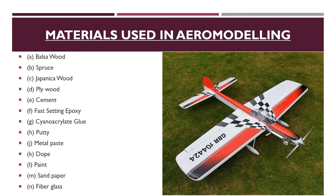Cement — model cement is a gel-like substance that, when applied to the joining surface of a model, it forms a membrane that bonds two different surfaces together because of its chemical qualities. Fast-setting epoxy — this material is used in the model because of its protective coating to extend the lifespan of an aircraft. Cyanoacrylate glue — also called CA in the model-making world — is used because of its strong and fast-acting qualities on the surface.